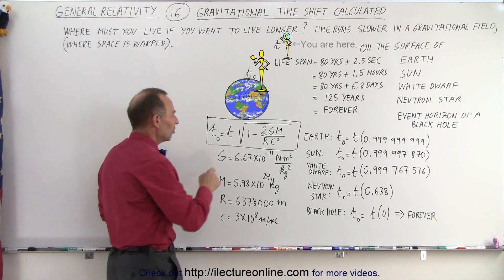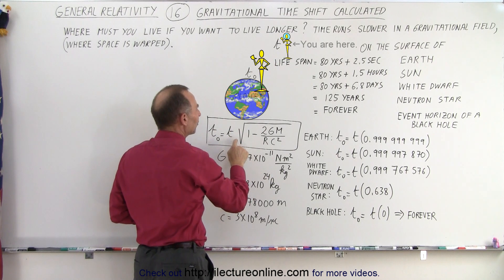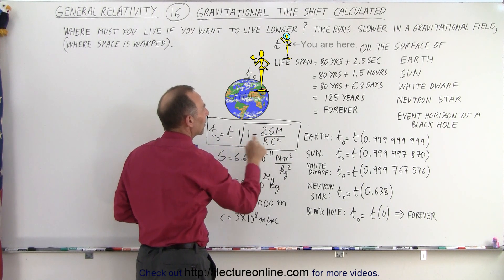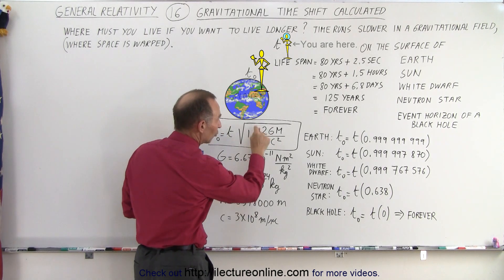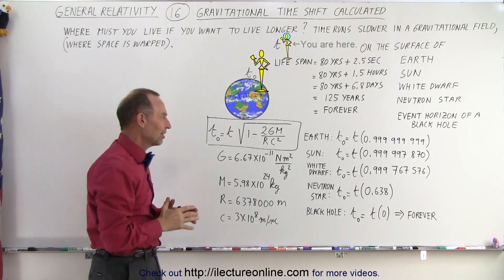And the equation is that it's the time that you spend out in space away from a gravitational influence times the square root of 1 minus 2GM over r divided by c squared. Now it turns out the square root of 2GM over r gives you the escape velocity of the gravitational field.